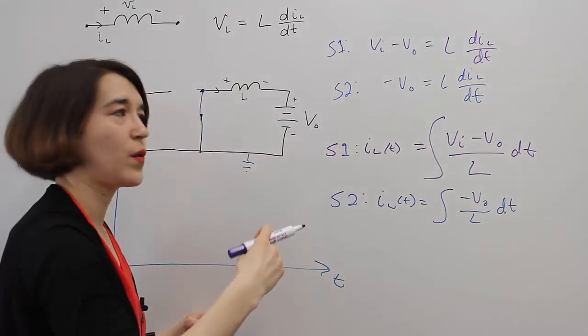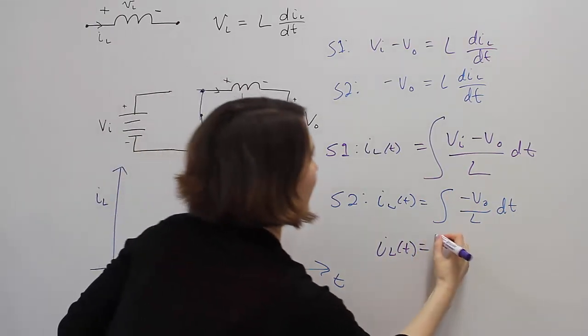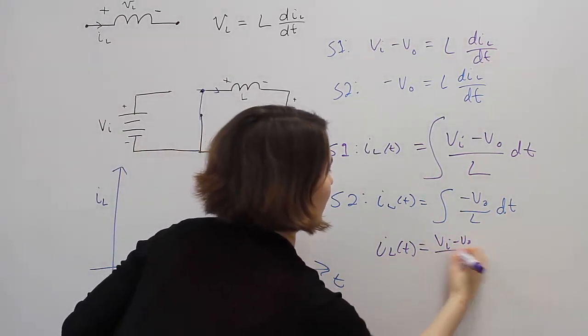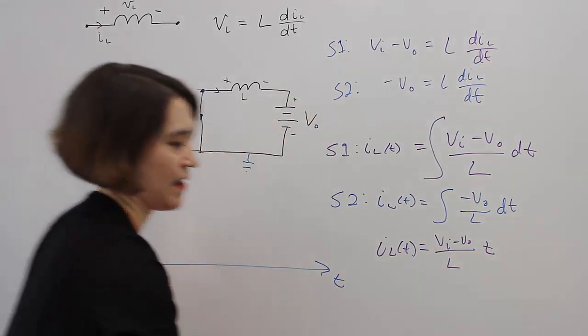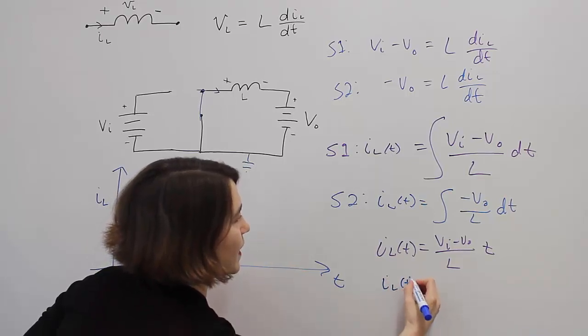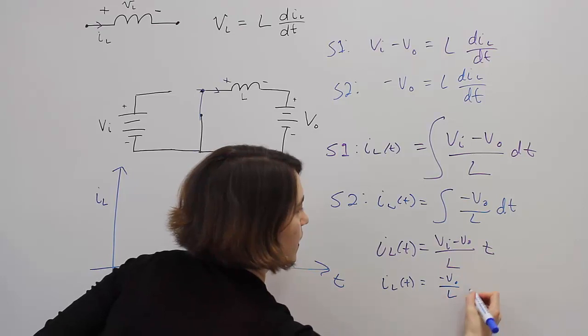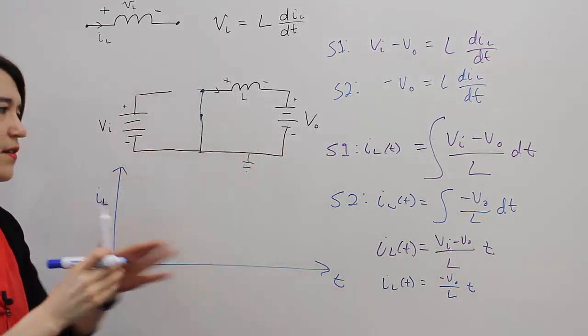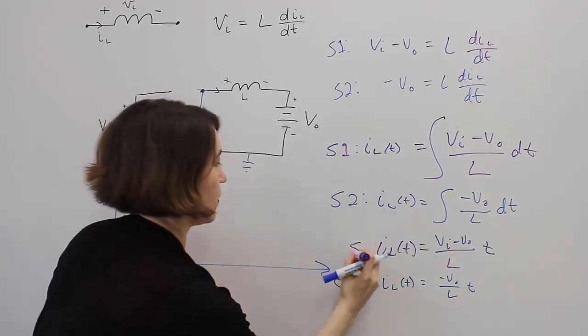And then for our stage two, we're going to get IL(t), this time just negative VOUT over L times t. These are our two equations. Again, S1 and S2, stage one and stage two.